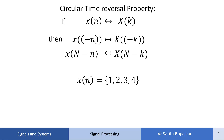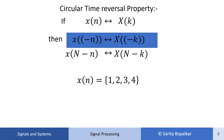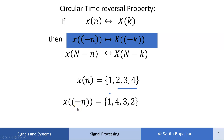Let us understand what circular time reversal or time folding means. Suppose x[n] has sample values 1, 2, 3, 4 — four samples in total. When we fold it, the first sample stays as-is, and the other samples are written in reverse order: 4, 3, 2. So the folded or circular time reversal sequence is 1, 4, 3, 2 — first sample unchanged, remaining samples in reverse order. This is the circular time reversal or circular folding operation.